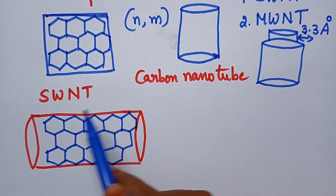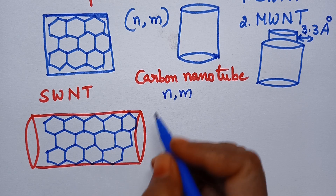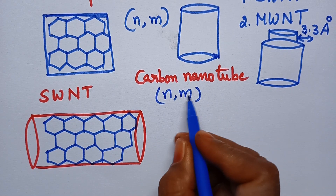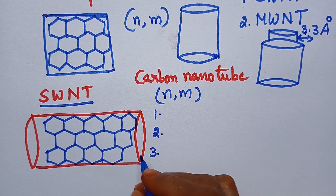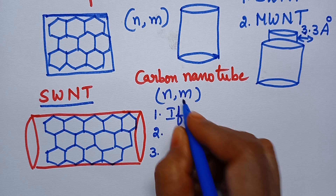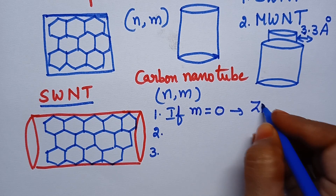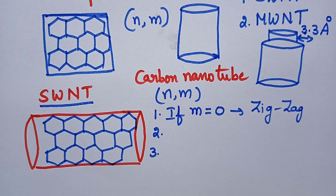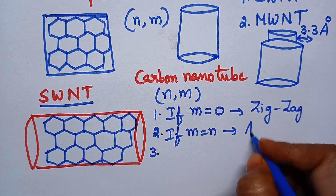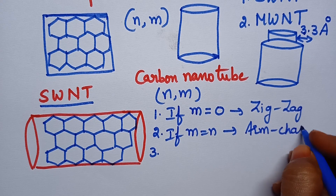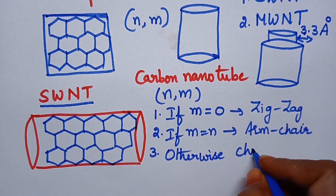Coming to single-walled carbon nanotubes, we require two indices to define them. Depending upon the values of N and M, single-walled carbon nanotubes can be subdivided into three categories. If the value of M is equal to 0, it results in the formation of zigzag carbon nanotubes. If the value of M is equal to N, it results in the formation of armchair carbon nanotubes. Otherwise, the carbon nanotubes will have a chiral structure.